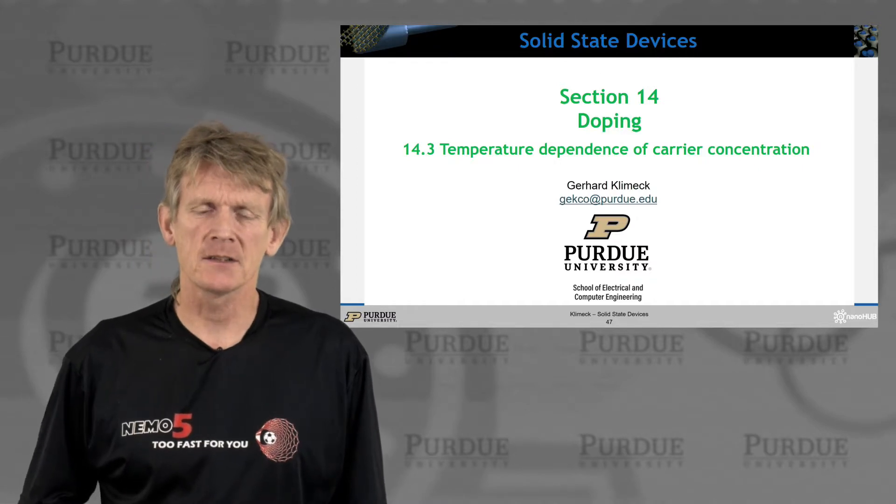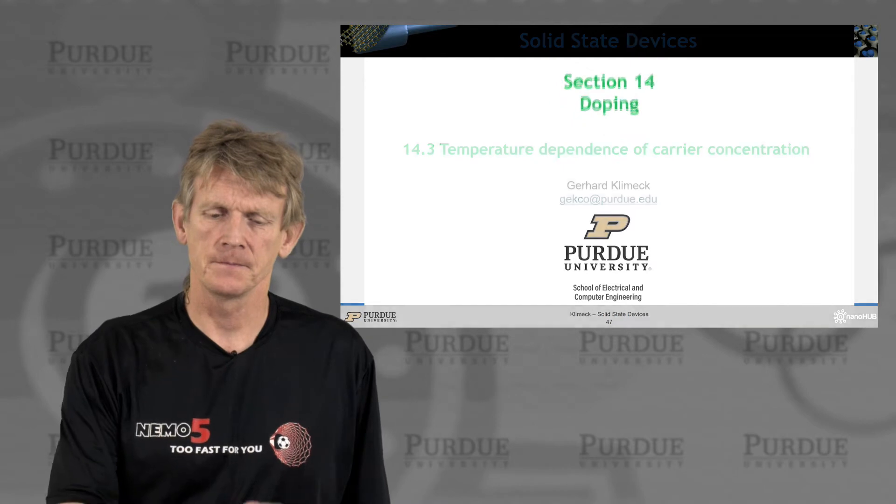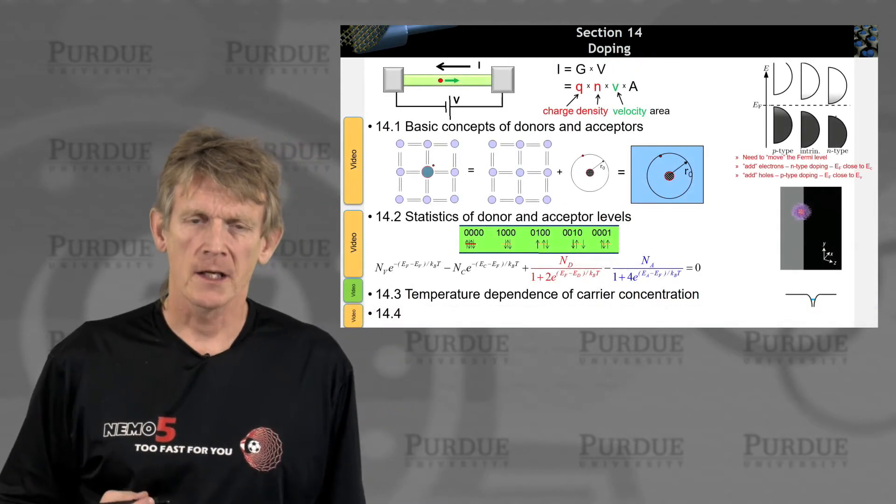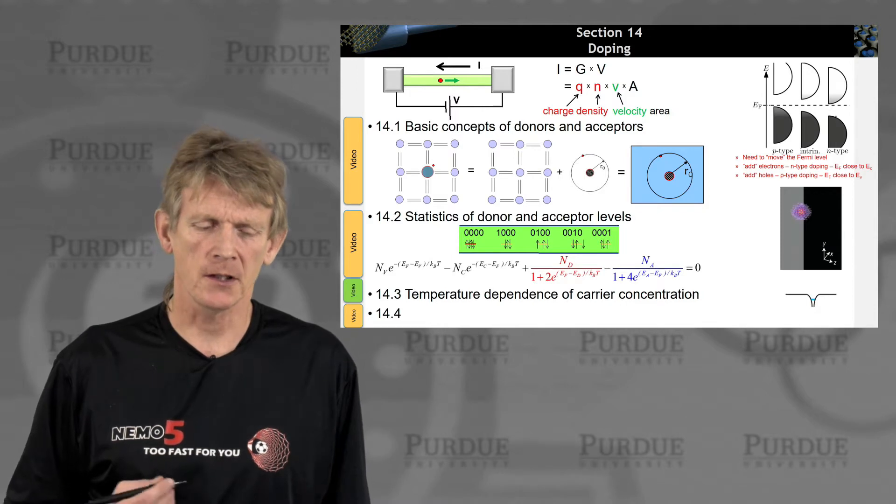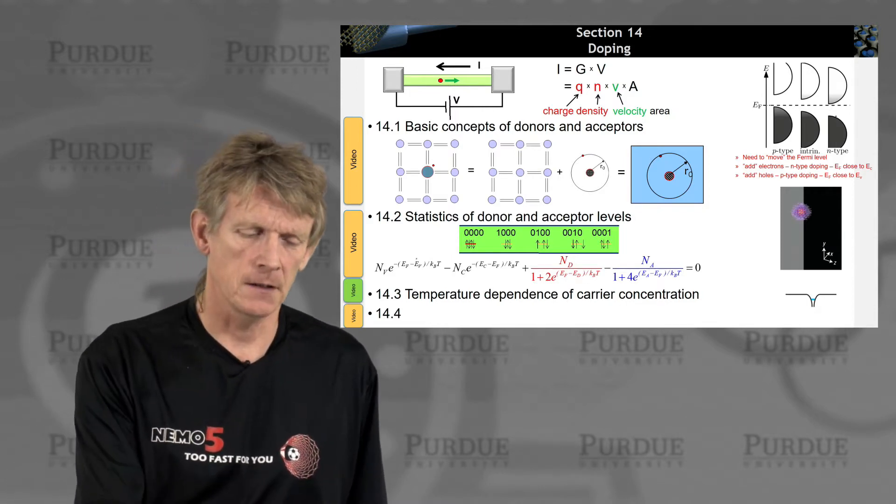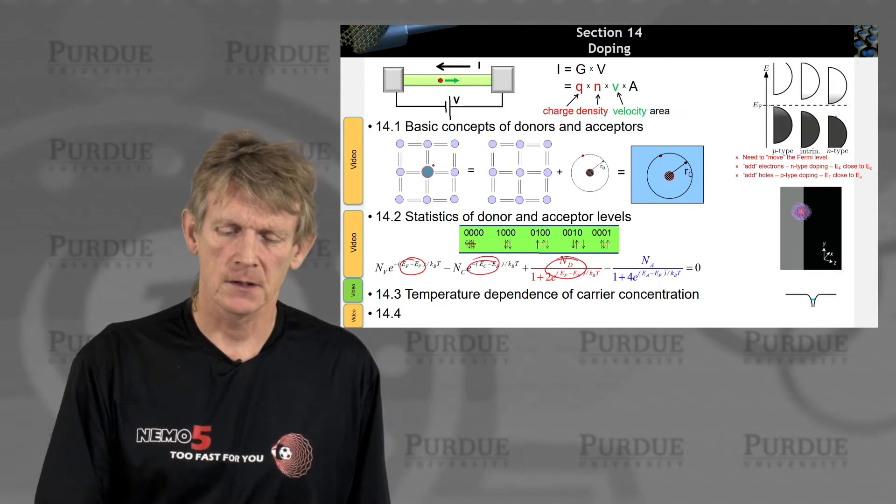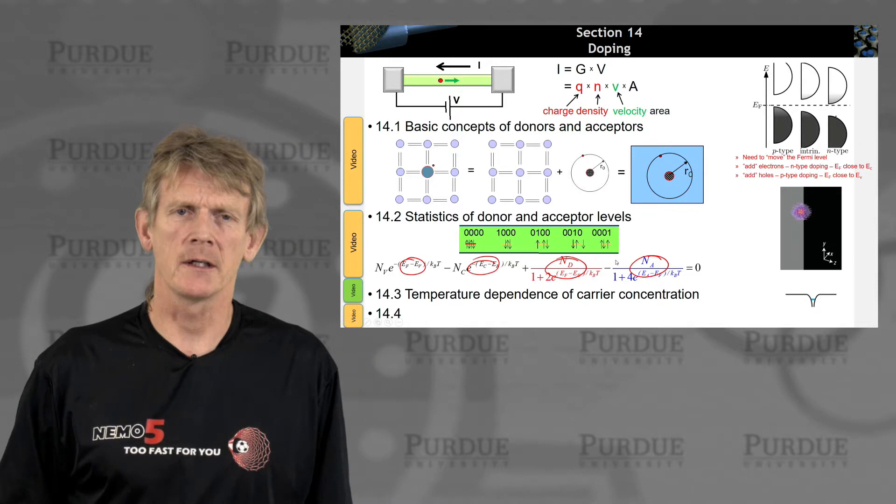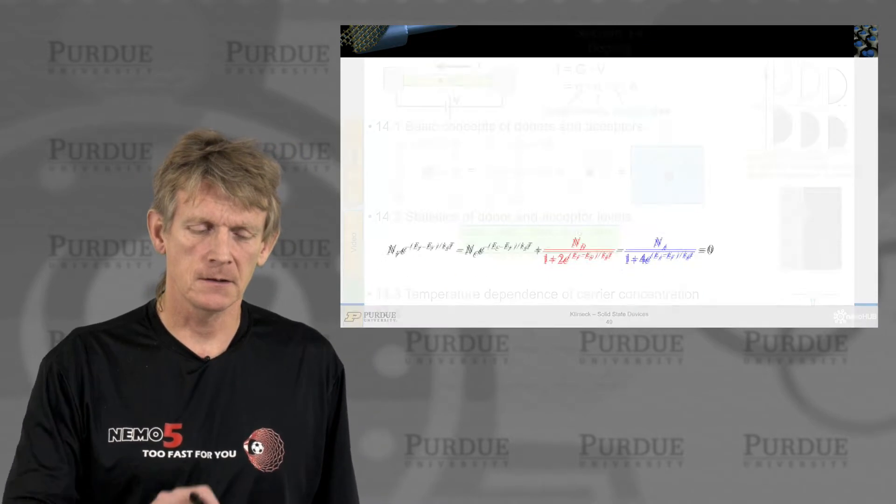All right. So now let's look at some of the temperature dependence of carrier concentrations. We had just seen the expression we can use for calculating a Fermi level given that we have holes, electrons, donors, and acceptors occupied according to a certain Fermi level. So, let's dive in and do this.